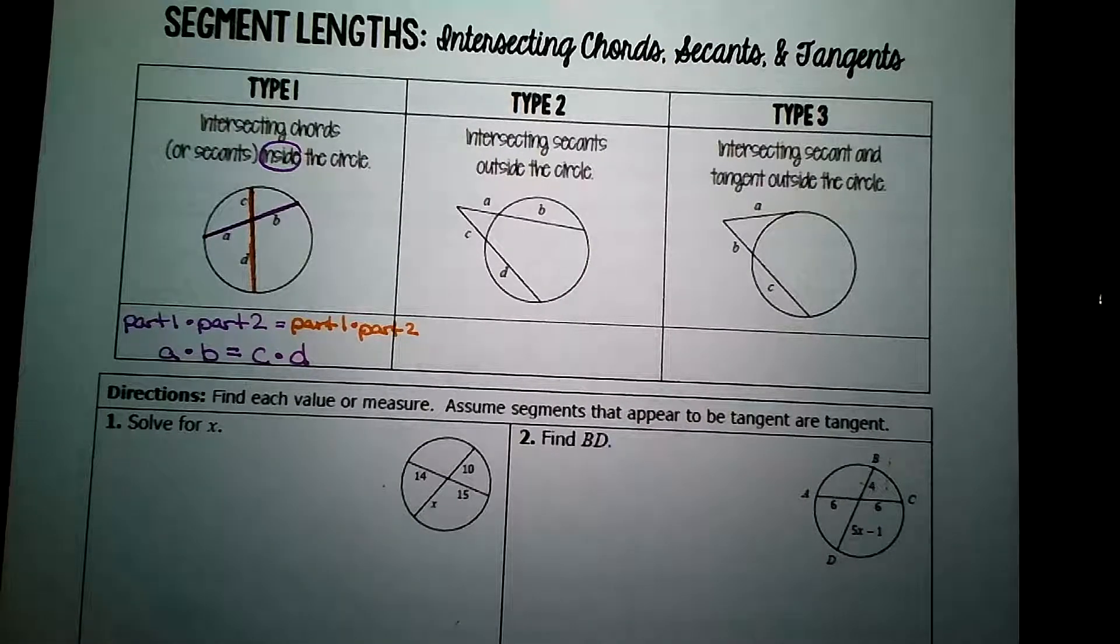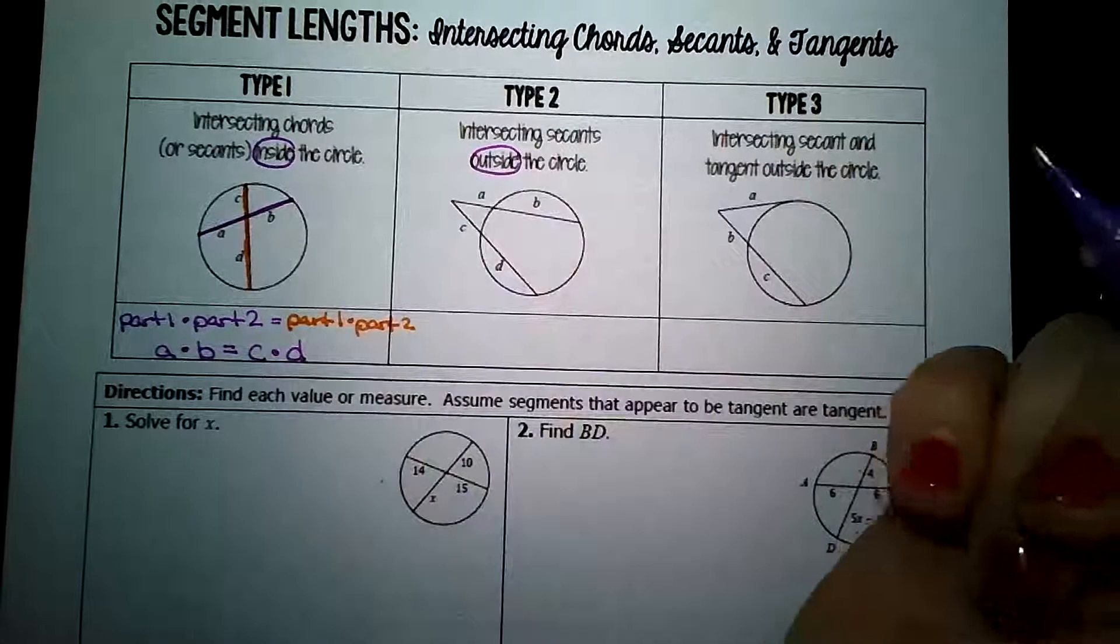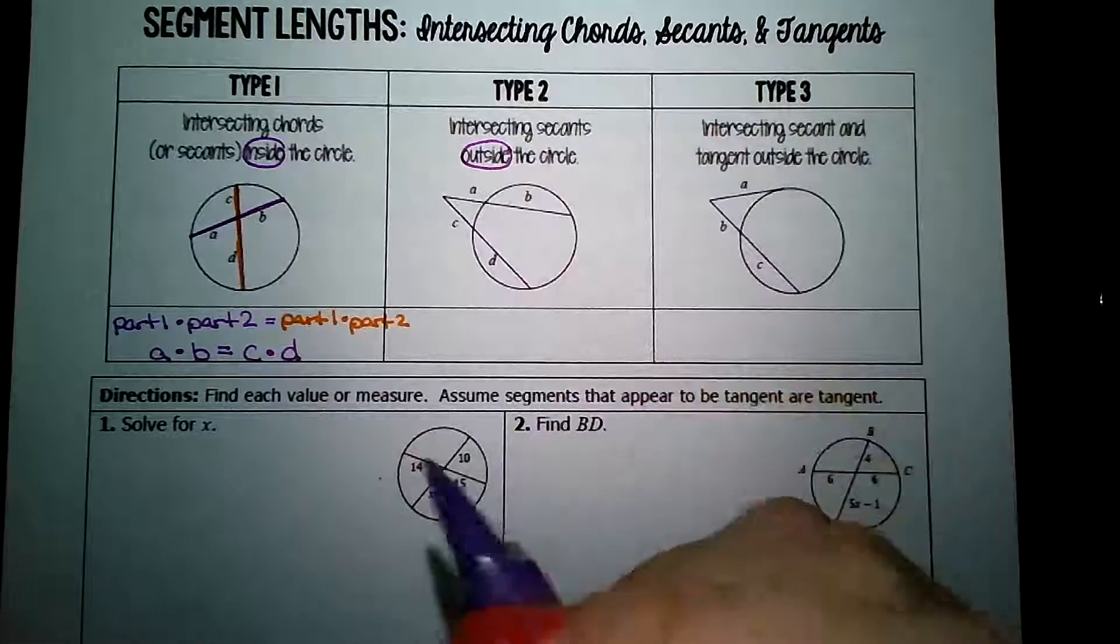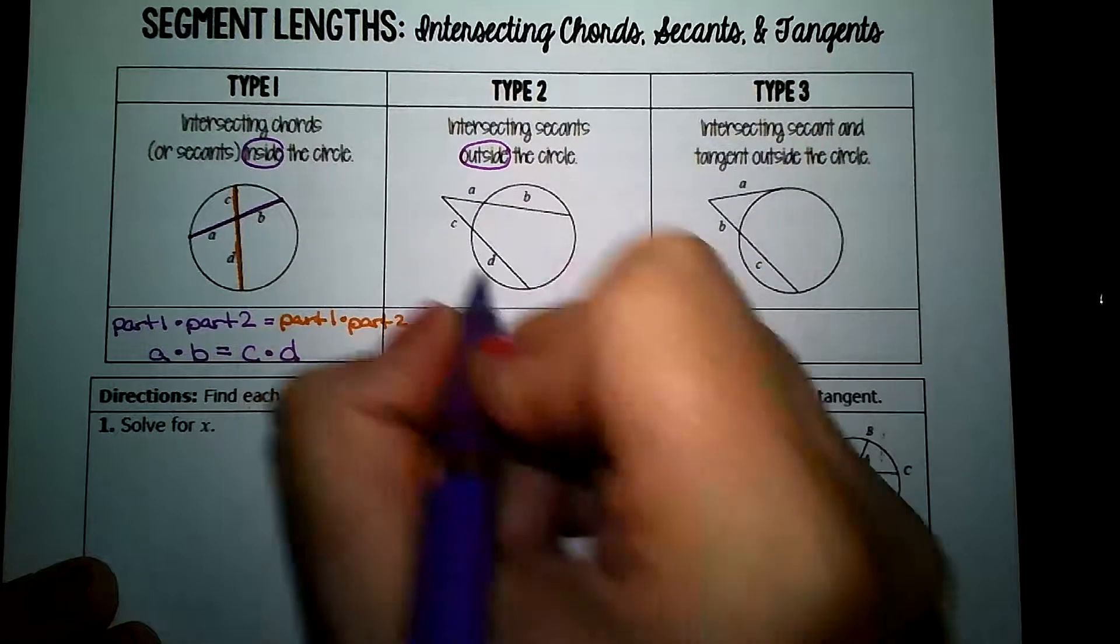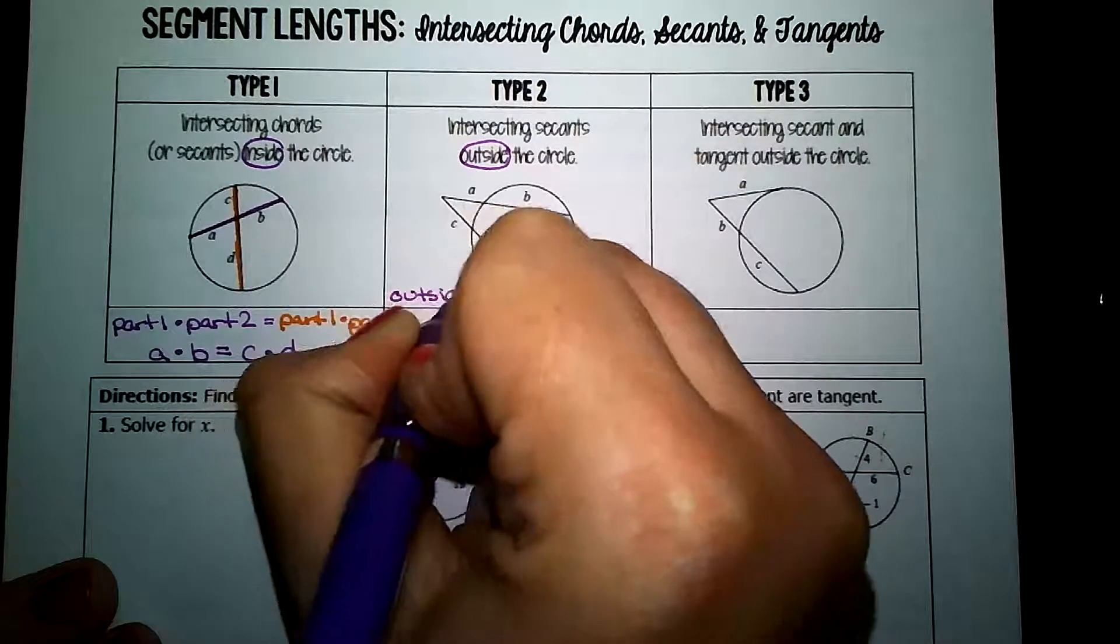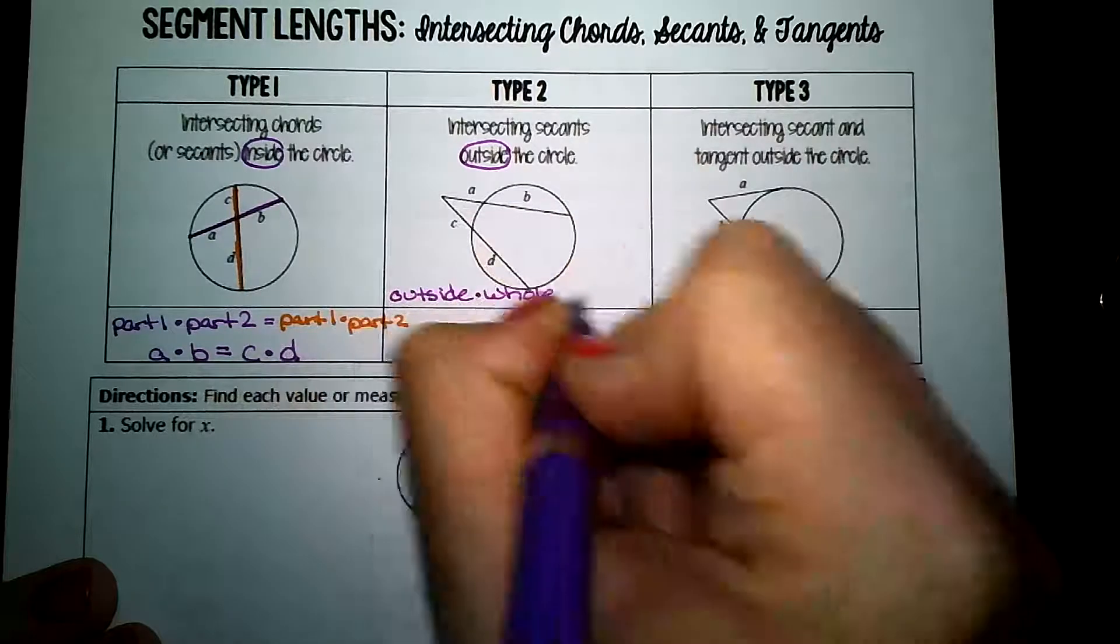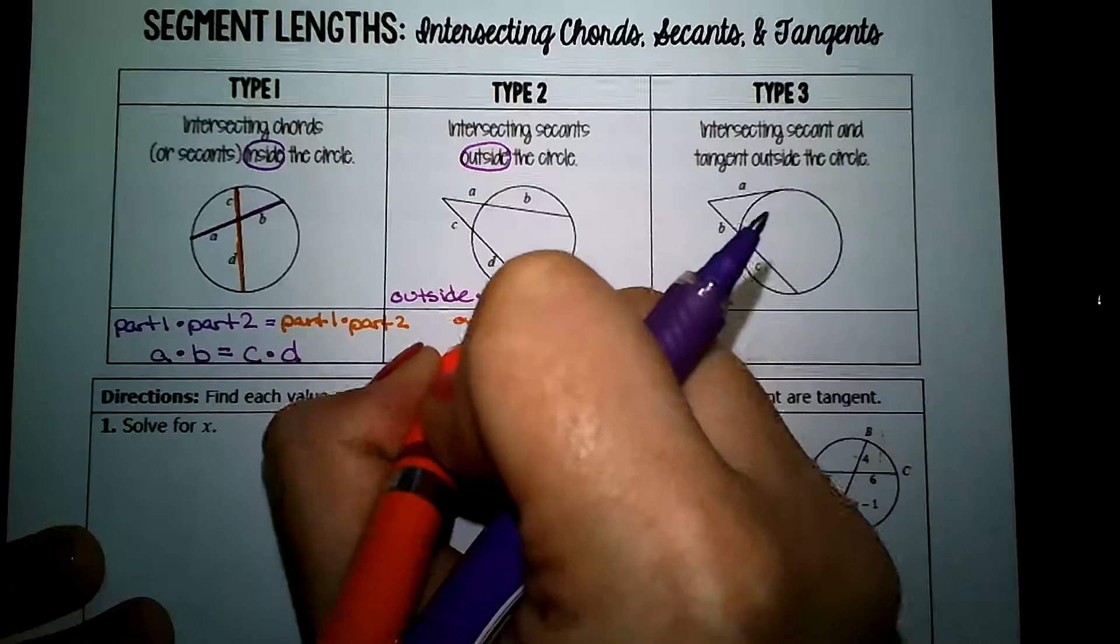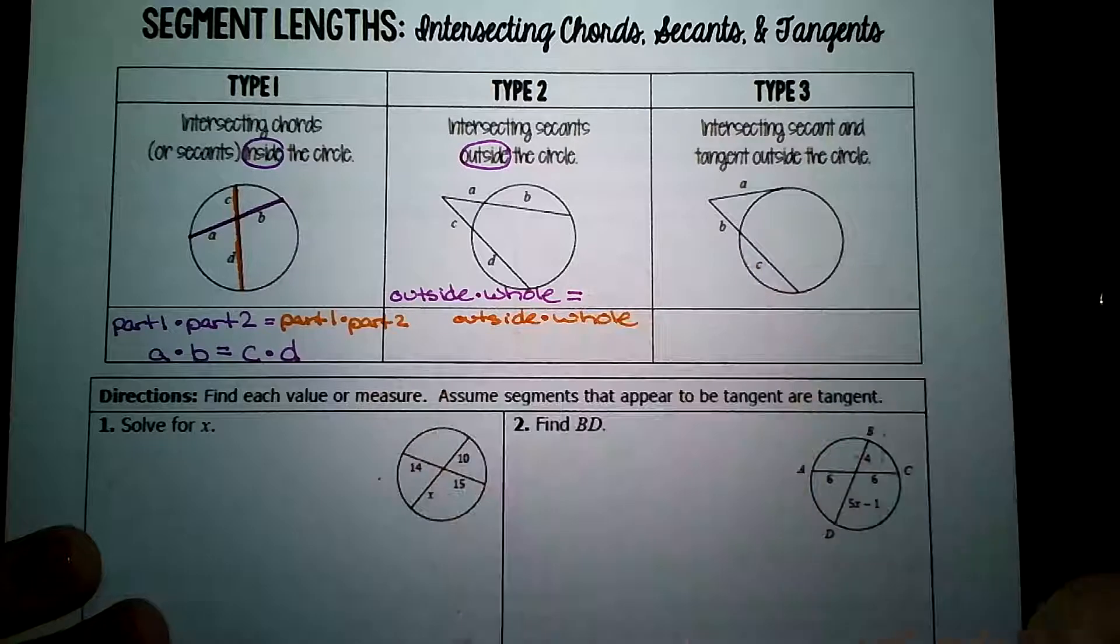Now, if we have an intersection on the outside of the circle, it's a different pattern. I like to have a pattern for it, and mine goes like this. I'll write it up here. The outside value times the whole value of one chord is equal to the outside value times the whole value of the second chord.